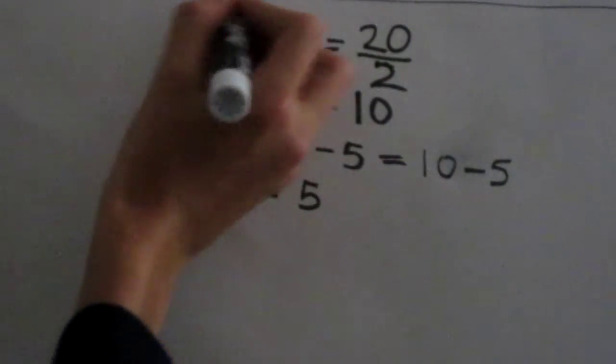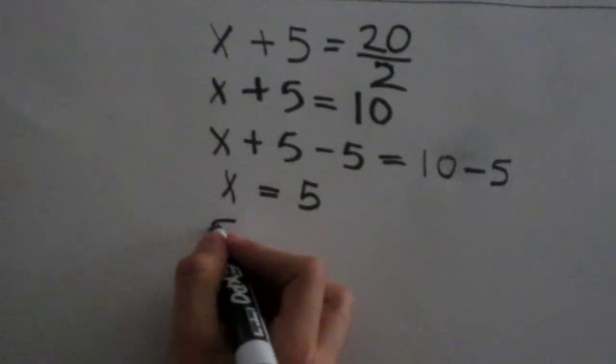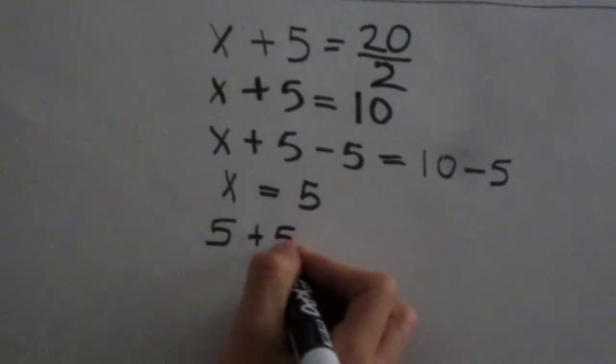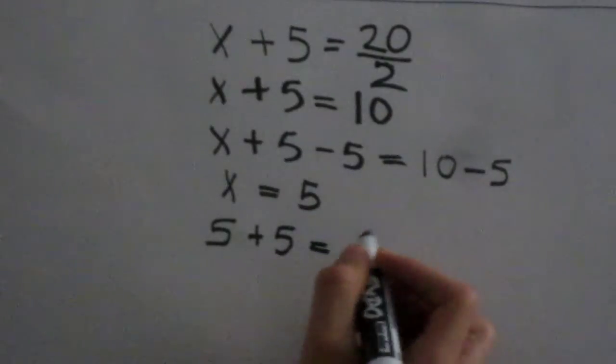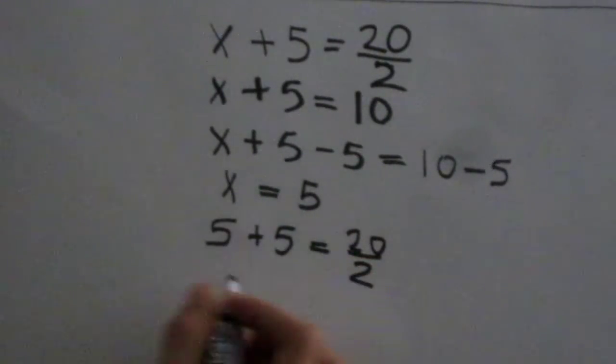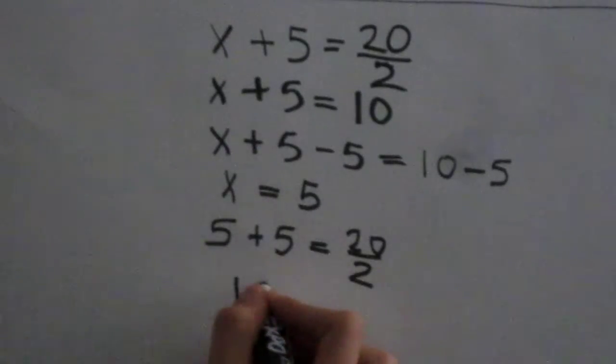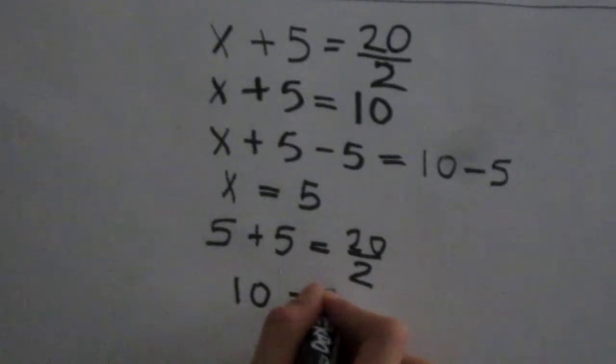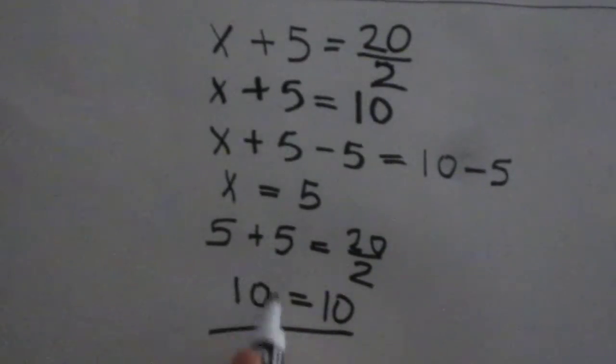So we know that x equals 5. So let's do 5 plus 5 equals 20 divided by 2. 5 plus 5 equals 10, and 20 divided by 2 equals 10. So we know that the equation is correct because 10 equals 10.